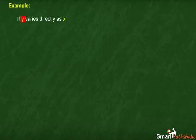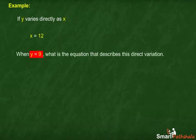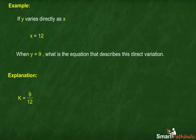Example A. If y varies directly as x and x is equal to 12 when y is equal to 9, what is the equation that describes this direct variation? We have the value of constant k as 9 upon 12, which is 3 upon 4. On substituting the value of k in the relation, we get the equation for this direct variation: y is equal to 3 upon 4 times x.